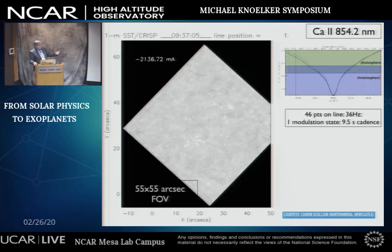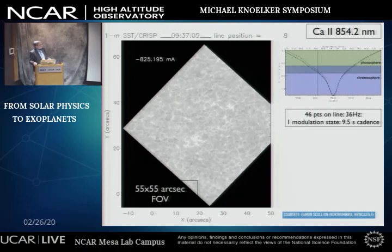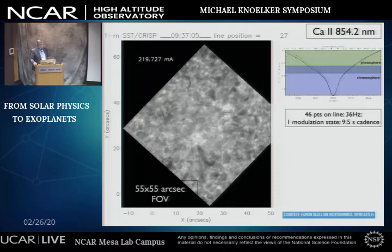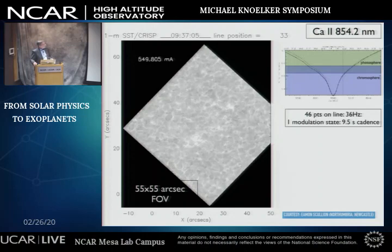This example was courtesy of Eamon Scullion from Newcastle. You see the calcium line at the top right, and a thin vertical line indicating the wavelength position during the scanning. On the left you see intensity images from the wing — from the photosphere — up through the line core and into the chromosphere, and that continues. This data was taken many years ago at the Swedish Solar Telescope with the CRISP instrument. I show it just because it's a very nice example of how such an instrument works.